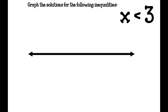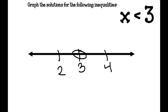Graph the solutions of x is less than 3. You need at least 3 numbers on your graph — I have 2, 3, and 4. Less than 3 means 3 is not included, so I make an open circle on 3. Then I shade everything to the left — all numbers less than 3 are a possible answer to this inequality.